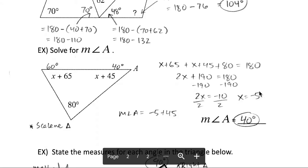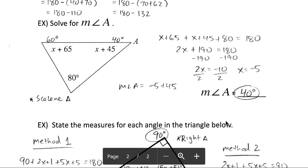So x is negative 5. We're not quite done, we want to plug that into angle A. So x plus 45 turns into negative 5 plus 45, which makes the measurement of angle A 40 degrees.